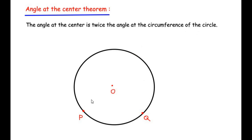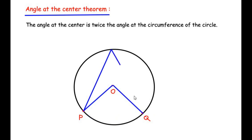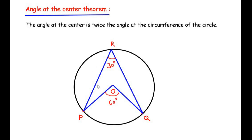In the diagram there is a circle with center O and two points on the circumference, P and Q. Using these two points, we make an angle at the center O and the same two points make an angle at the circumference at point R. According to the theorem, the angle at the center is two times the angle at the circumference. For example, if the angle at the circumference is 30 degrees, then the angle at the center is 2 times 30, which is 60 degrees.